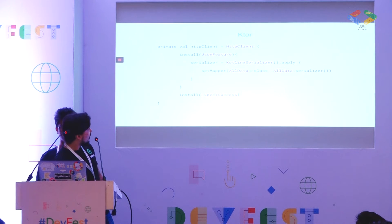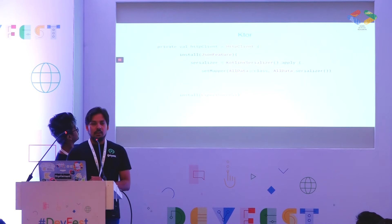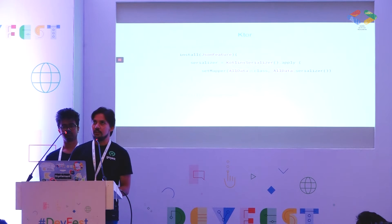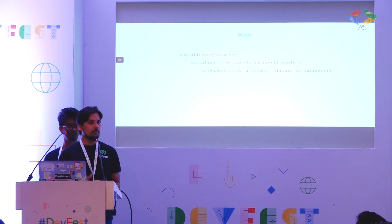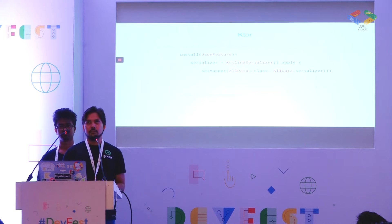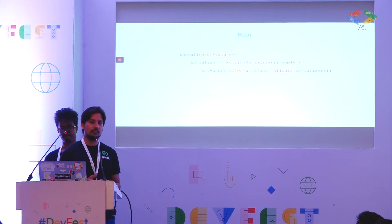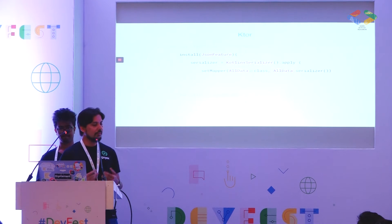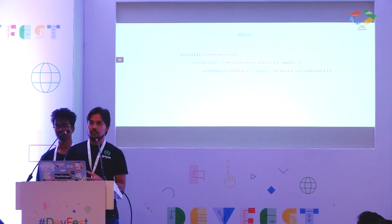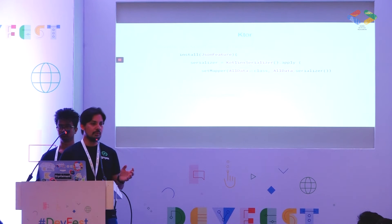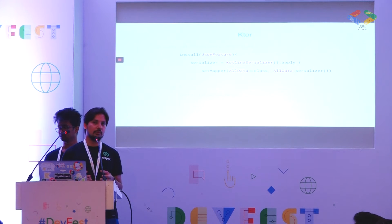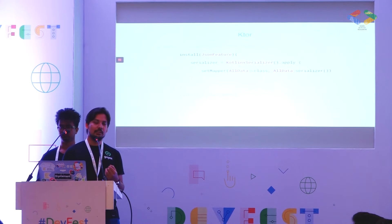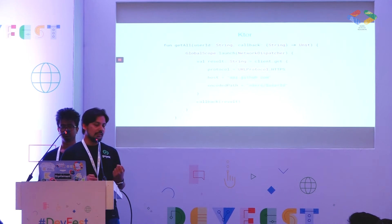We are going to use a library called Ktor, developed by JetBrains. It's a networking library you can use to build servers or for client-based networking across multiple platforms. With Ktor, we create an HTTP client and install features around it. Every time we do a network call we get back JSON, and we want to manipulate objects, not strings. So we use the Kotlin Serialization library — also by JetBrains — which transforms JSON into data objects and works across multiple platforms. The same piece of code can transform JSON into objects on both Android and iOS.